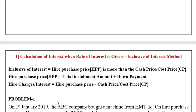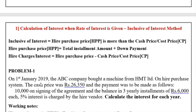Now we will take the first problem. On 1st January 2019, ABC company bought a machine from HMT Limited. There are two parties in a hire purchase system: the higher purchaser and the higher seller or vendor. The higher purchaser is the person who buys goods from the vendor on a hire basis. ABC company is the higher purchaser and HMT Limited is the higher vendor.